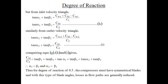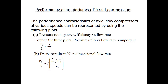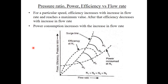Performance characteristics of axial compressors: the performance at various speeds can be represented by two cases. First, pressure ratio, power, and efficiency versus flow rate — out of these, pressure ratio versus flow rate (P2/P1 vs M-dot) is the most important. Second case: pressure ratio versus non-dimensional flow rate, where the x-axis uses a function of mass flow rate, stagnation temperature T01, and stagnation pressure P01.